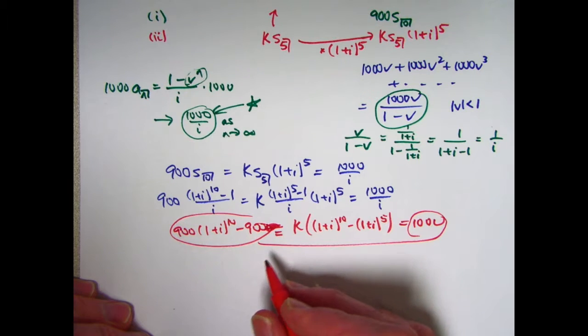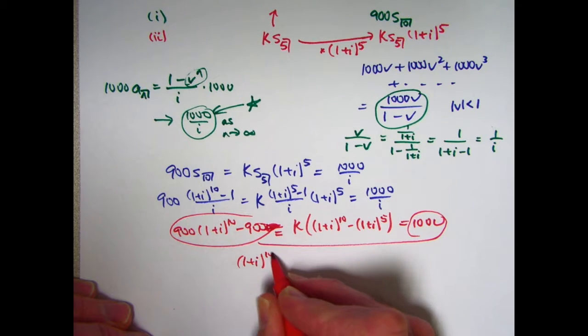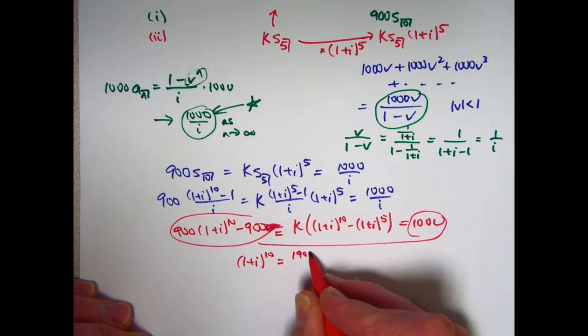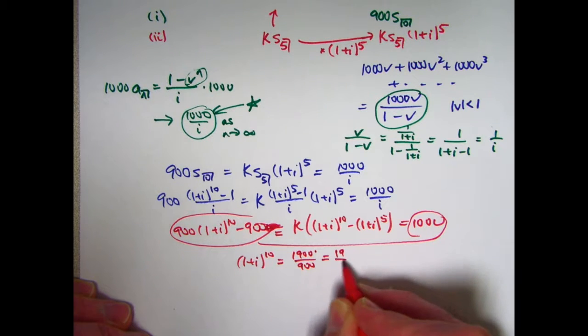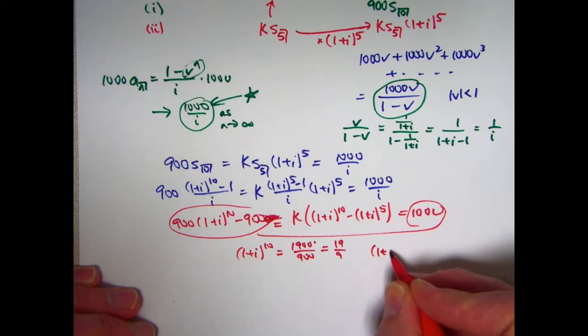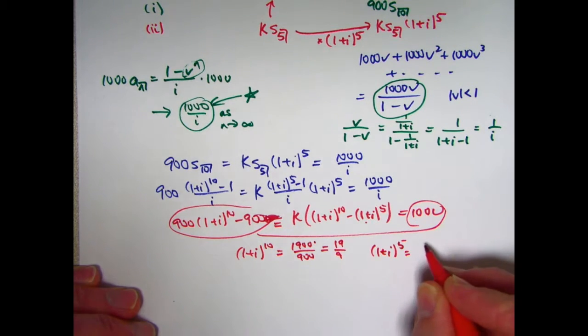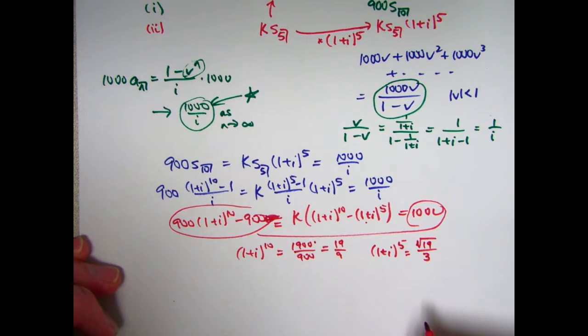The equality between this and this can allow us to solve for one plus i to the 10th. Let's see. If we add 900 to both sides and then divide by 900, we'll get one plus i to the 10th is 1900 over 900 or 19 ninths, which means also that one plus i to the fifth, since we'll need that here, will be the square root of that. That'll be square root of 19 over 3.